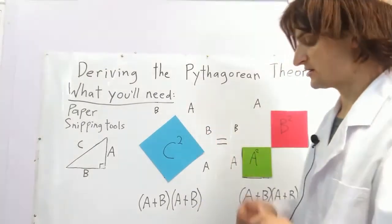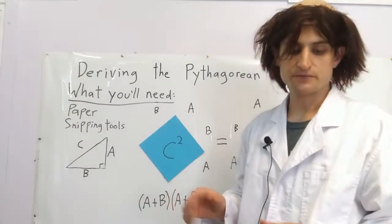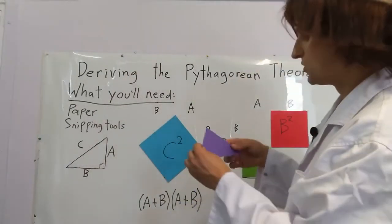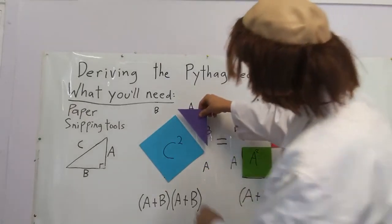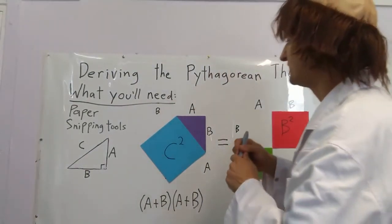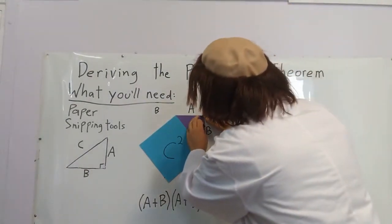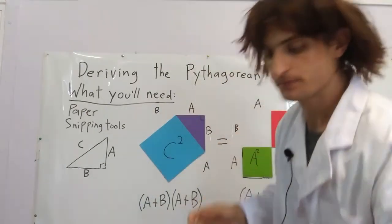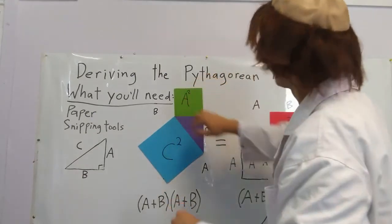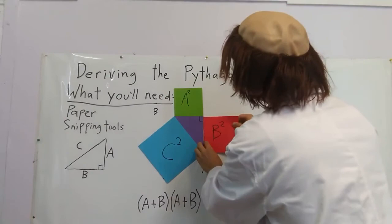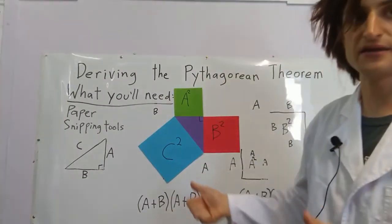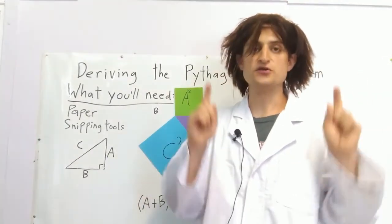And we've proved it. Congratulations. Now to complete the Pythagorean theorem, we can take our triangle, put it right here, and label it with a right angle. We'll take this A squared, pack it up here, this B squared, and put it right here. This is the Pythagorean theorem. Congratulations, you've proved it.